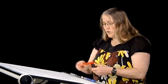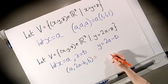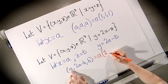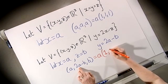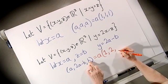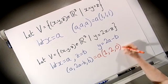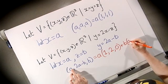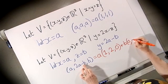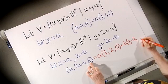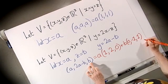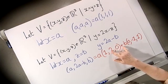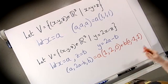And our general vector becomes (a, 2a - b, b), and again we can write this as a linear combination. Because that is equal to a times (1, 2, 0) plus b times (0, -1, 1). So here we needed two vectors, two variables, we have a two-dimensional vector space.